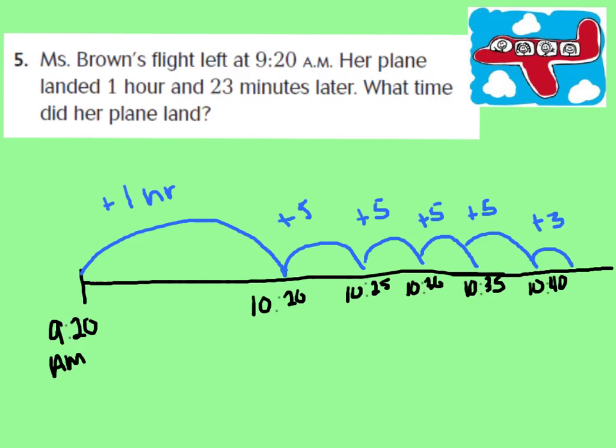Let's go over our answer. Here's the model I drew — your timeline might look a little different if you used different increments, but as long as we get the same answer, you'll be okay. Her flight left at 9:20 a.m. — that's my start time. It said she landed 1 hour and 23 minutes later, so I did a big jump for 1 hour, and when I jumped an hour, I got to 10:20.